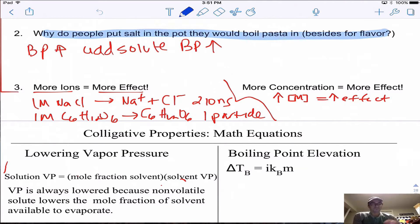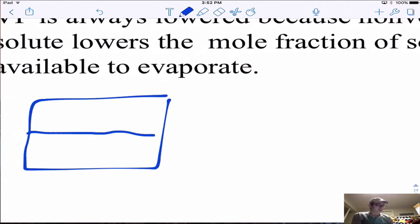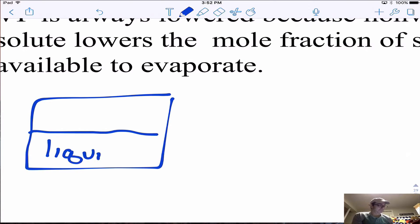One colligative property is vapor pressure lowering. Vapor pressure is the pressure that a liquid which evaporates and forms gas exerts on the container. Inside my container, the liquid evaporates, forms gas, and that gas exerts pressure called vapor pressure. The liquid only really evaporates from the surface.